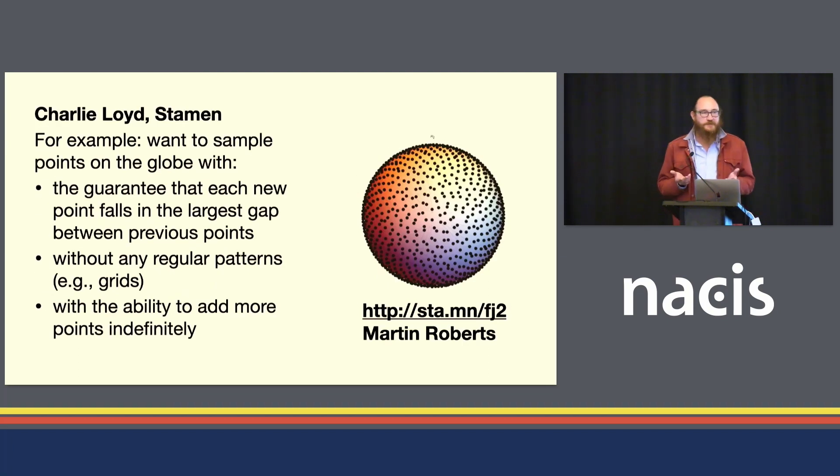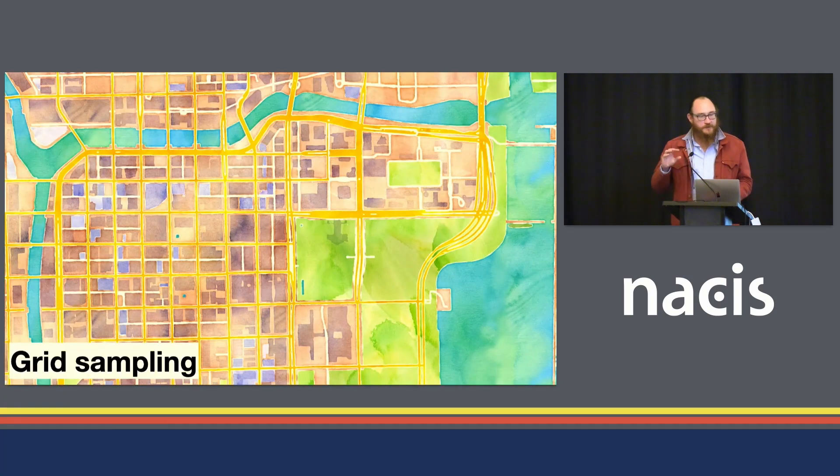So Martin Roberts has a bunch of great examples about these semi-irregular numbers. I encourage you to look at his work. Let's say you have a globe and you want to sample points on the globe. You want to sample here, sample there. So you want to do three things because you want to be as efficient as you can and you want to cover as much ground as you possibly can. So you want to guarantee that each new point falls in the largest gap between previous points. And I never want them to repeat. I don't want any grids because I'm sampling. And I want to be able to add more points indefinitely, which is to say they'll never overlap one another. I don't ever want to do the same sample twice.